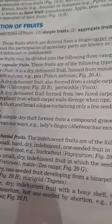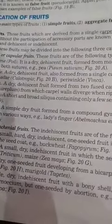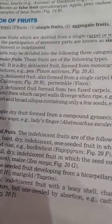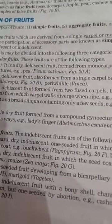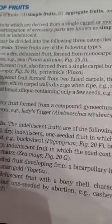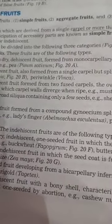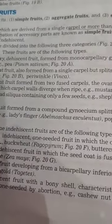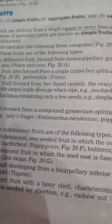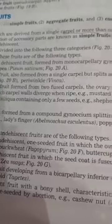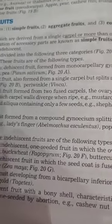The classification of fruit has three types: simple, aggregate, and composite. A simple fruit develops from a single ovary of a single flower. Simple fruits include fleshy fruits and dry fruits.